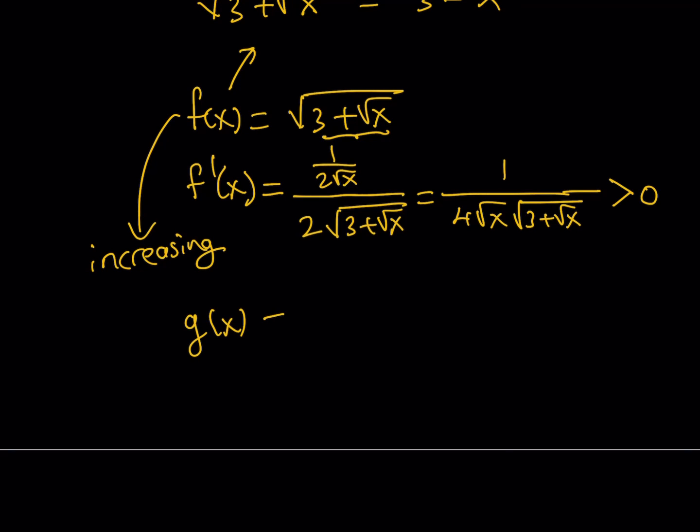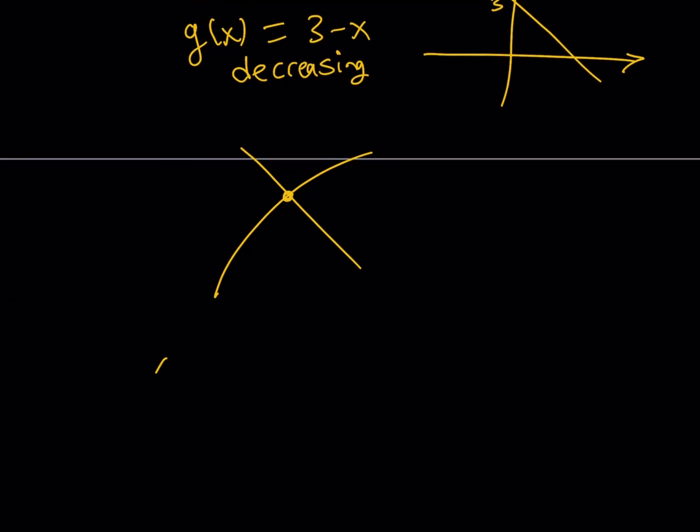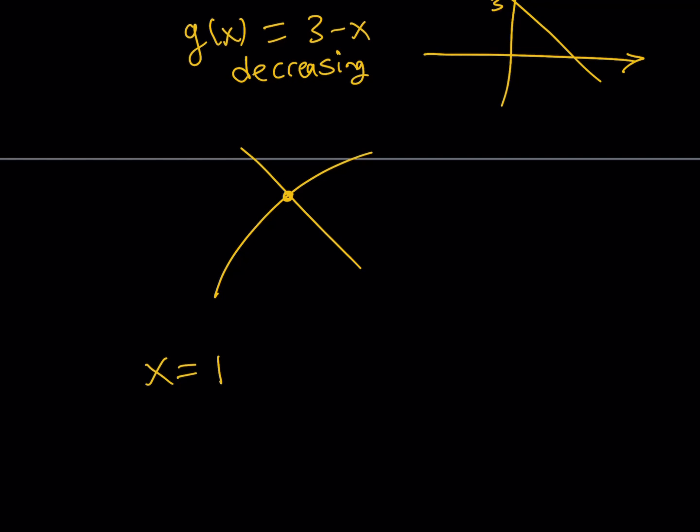What about the second function? Let's call that g of x. g of x is 3 minus x. As you know, this is a line with slope negative 1, and its y-intercept is 3, so it kind of looks like this. And obviously, clearly, it is a decreasing function. So what is that supposed to mean? I have an increasing function, and I have a decreasing function, and they intersect at one point. That's it. And that is going to be at x equals 1, so x equals 1 is going to be the only solution for this equation.